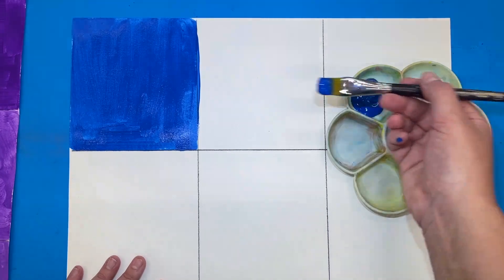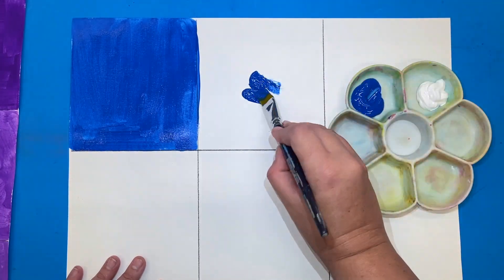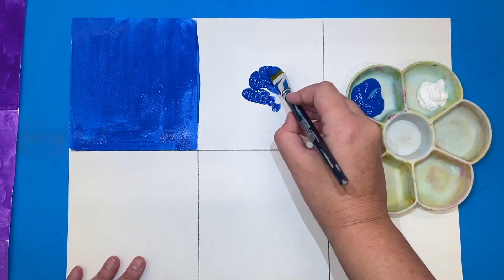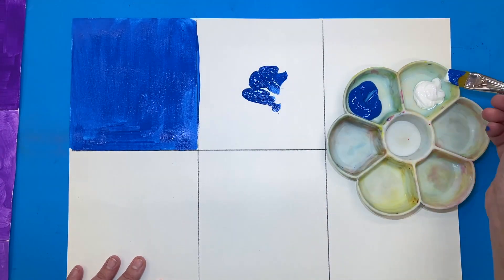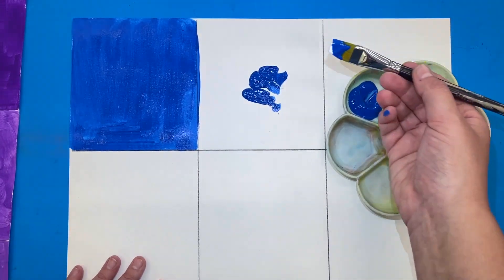Next thing that I'm going to do is I'm going to take and actually put a good amount of paint onto my paper and we're going to use the paper to do some mixing. And I'm just going to do a quick little tap of white with my brush.